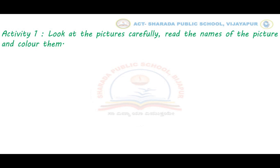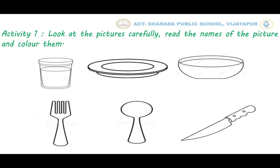So dear kids, let us do our first activity. Look at the pictures carefully, read the names of the pictures, and color them. Now tell me kids, can you see these things in your home? Yes kids, we are using all these things every day while having food, drinking water, and preparing food.